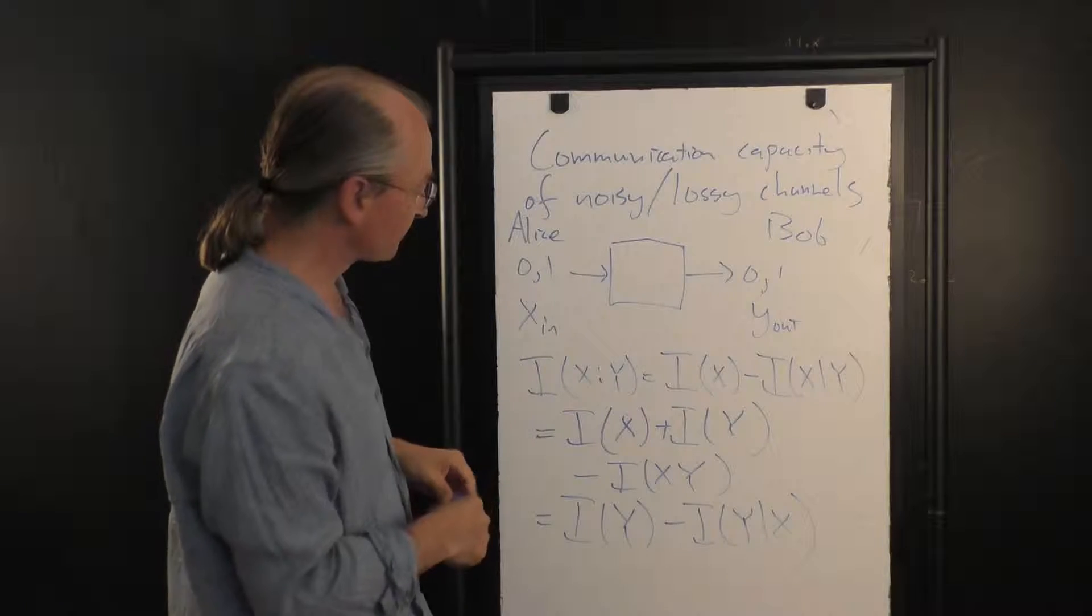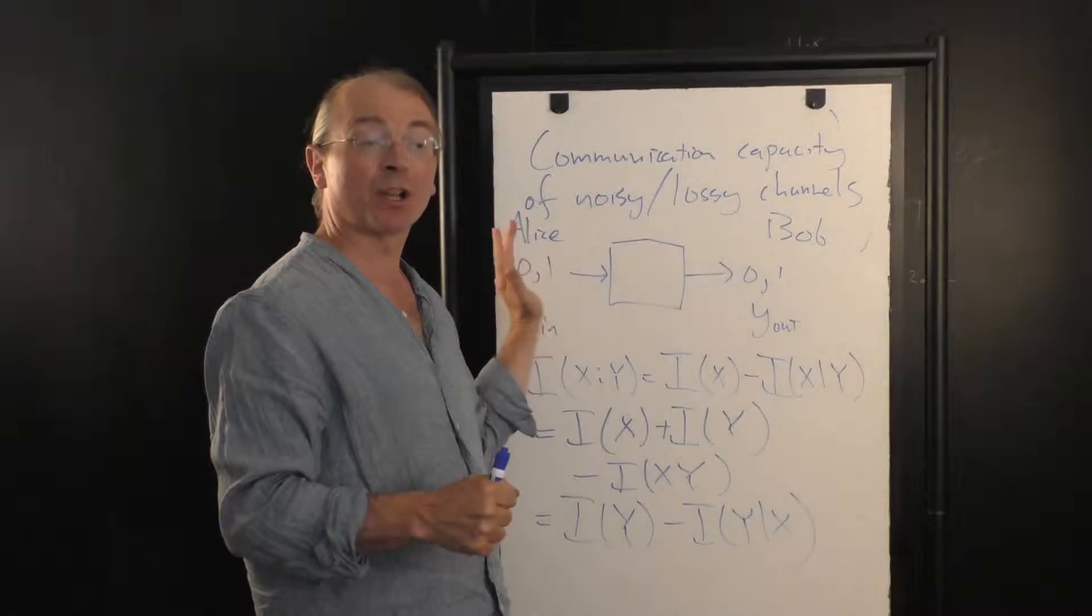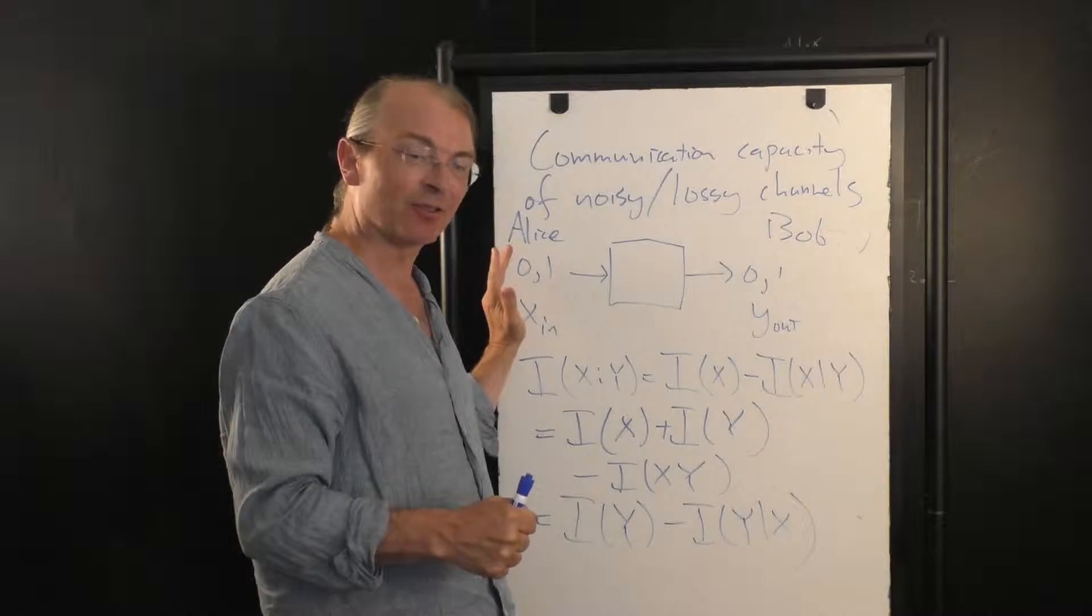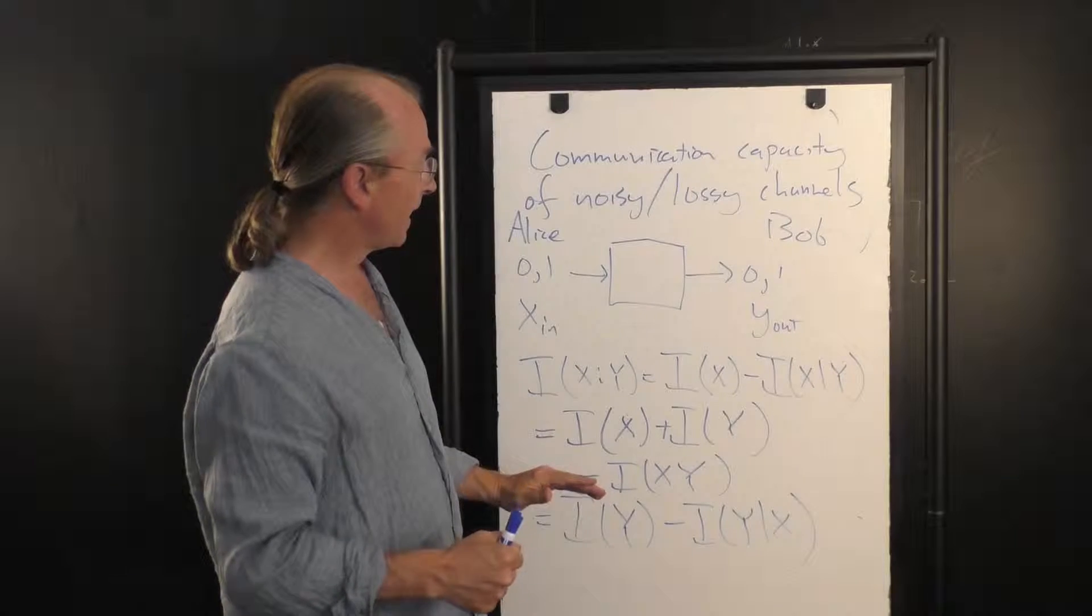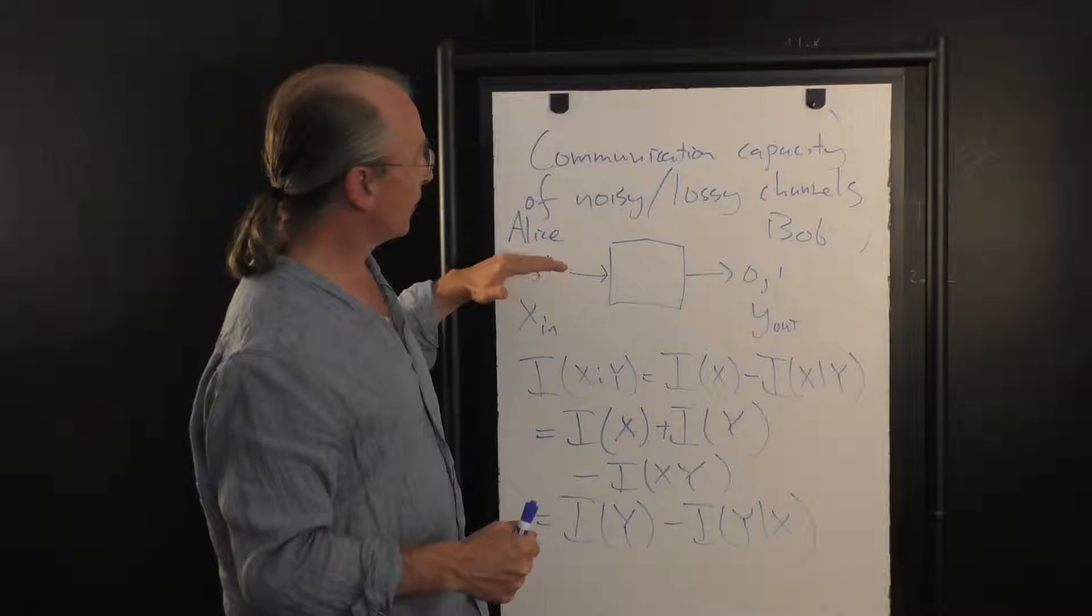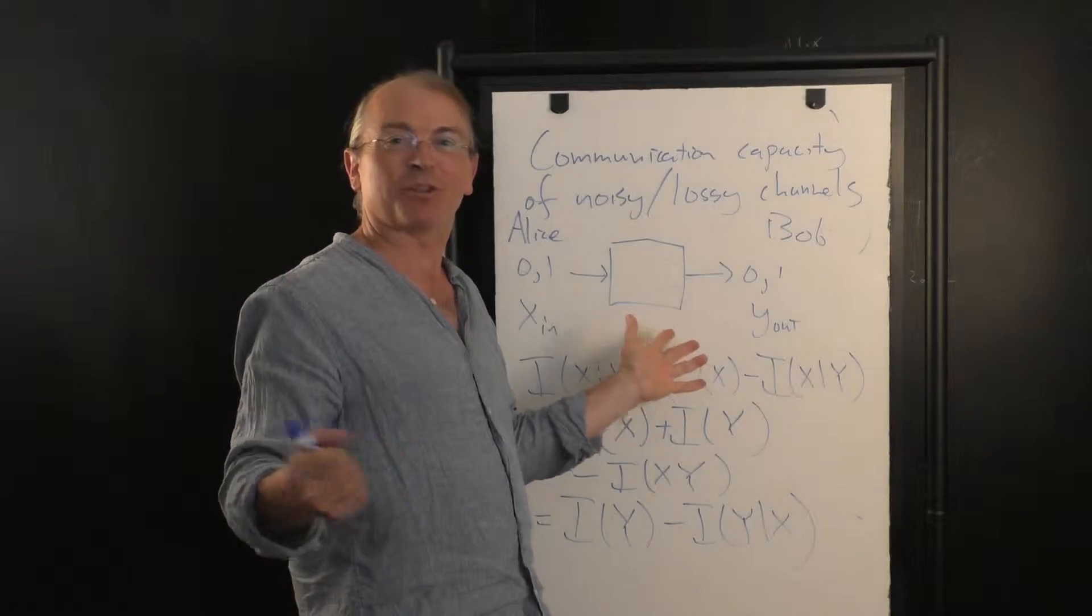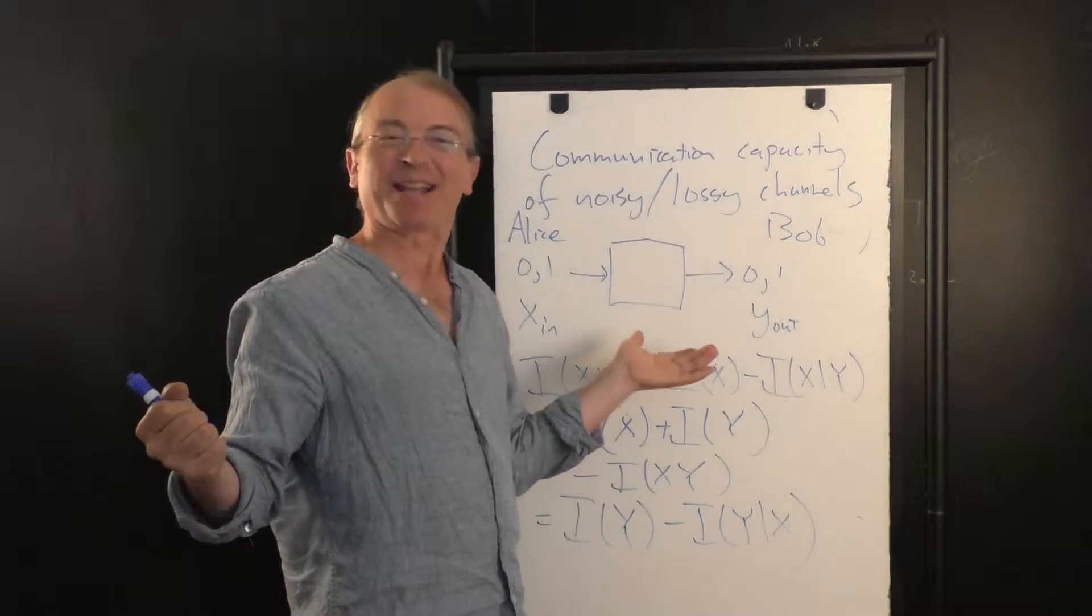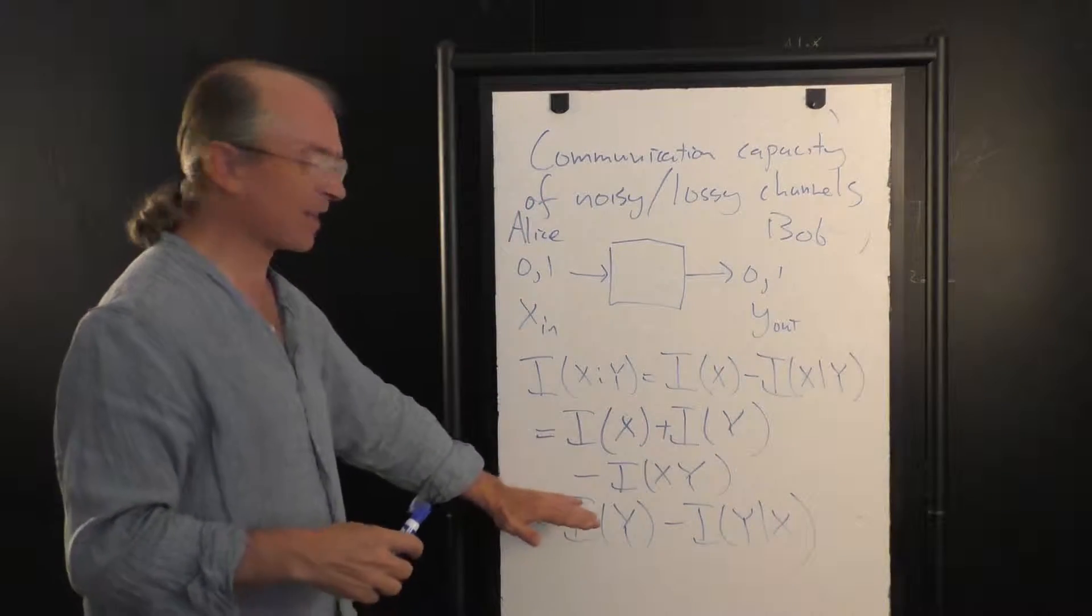So the mutual information is also, we can describe it in Bob's terms by the amount by which his uncertainty about what Alice sent down is reduced by what he receives. We can also describe it as being the degree of reduction in Alice's uncertainty about Bob, given that she knows what she sent. If that made sense. Kind of. Anyway, the mathematics says that it's symmetric.